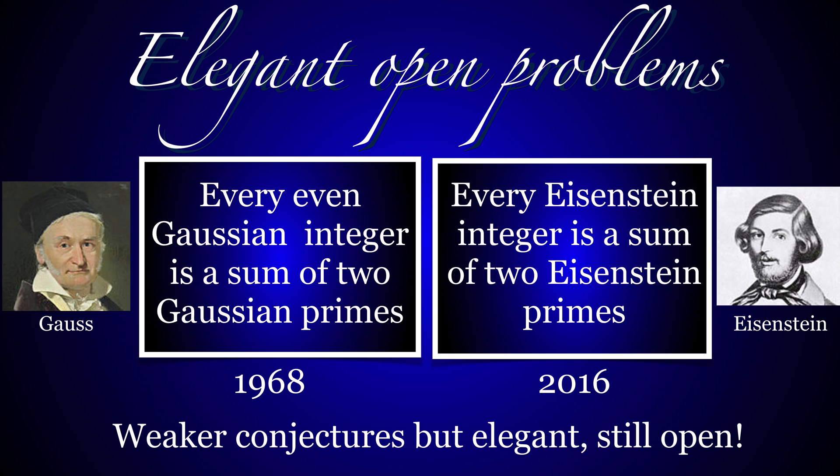Here are two elegant open problems: every even Gaussian integer is a sum of two Gaussian primes, which just appeared in that paper we've seen. Another elegant guess is that every Eisenstein integer is a sum of two Eisenstein primes. The computer can test it for small primes.